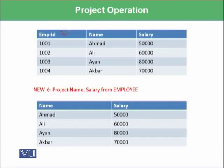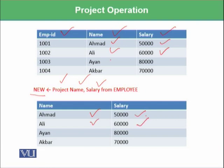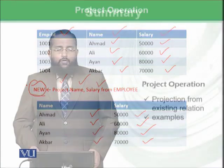We have a relation called 'employee' with employee ID, name, and salary. We construct a new relation named 'new' using the project operation, selecting name and salary from employee. This adds all employees: Ahmed with 50,000 as the first tuple, Ali with 60,000 as the second, Ayaan with 80,000 as the third, and Akbar with 70,000 as the fourth tuple of the new relation.